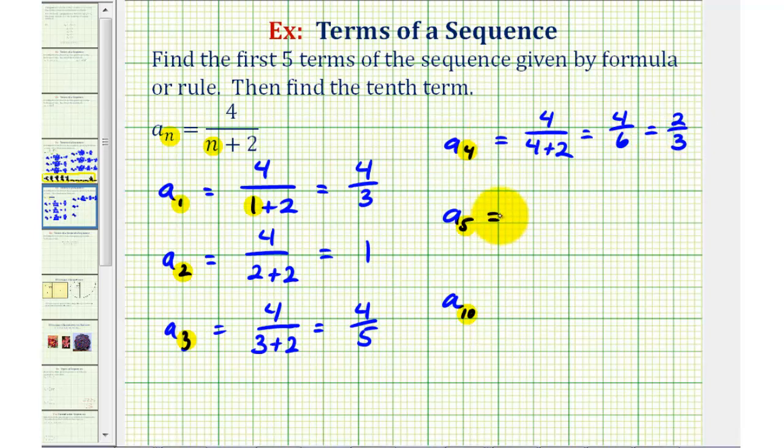And then for our fifth term, we have four divided by the quantity five plus two. So we'd have four over seven, or four sevenths for the fifth term.